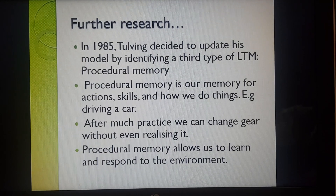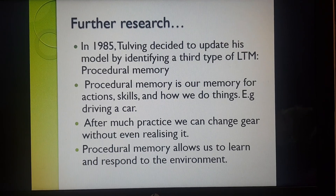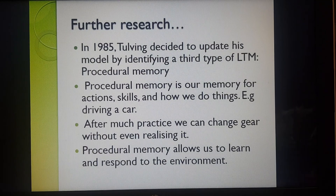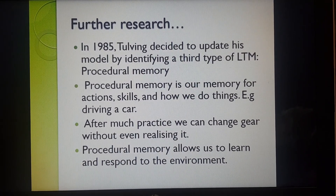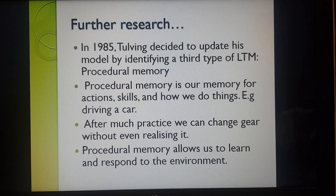The model doesn't finish there. In 1985, Tulving updated his model by identifying a third type of long-term memory called procedural memory. Procedural memory relates to our memory for actions, skills and how we do things. For example, driving a car is a skill that needs practice — so obviously we have driving lessons.